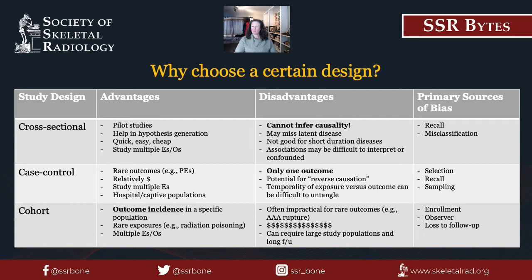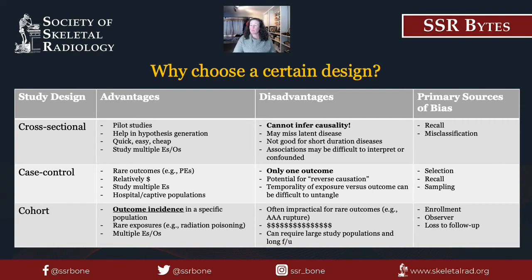In the cohort study, you have the chance to follow a patient after a known exposure, or in the case of randomized controlled trials, an assigned exposure. Cohort studies are great for rare exposures like radiation poisoning, but not great for rare outcomes like a ruptured abdominal aortic aneurysm. Cohort studies tend to be more expensive, difficult to set up, run for a long time, and can lose a lot of patients to follow-up. However, you do get the most robust answers when you run a cohort study.